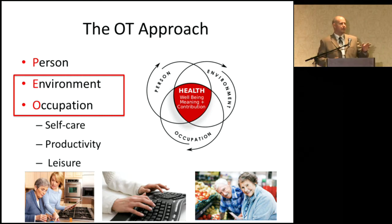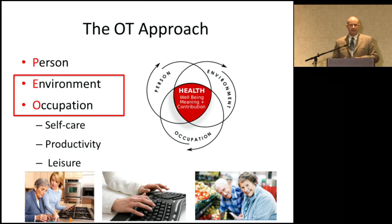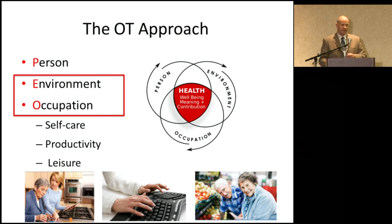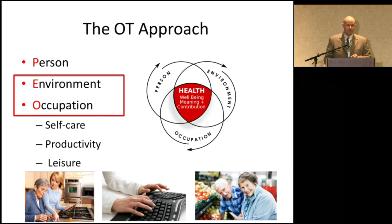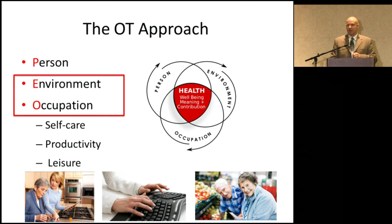Occupational therapy takes a holistic approach using a three-pronged system: the person, the environment, and the occupation. Today I'll be focusing primarily on occupation and environment. The different tasks we complete in everyday life break down into three main areas: self-care, productivity, and leisure. Self-care is getting up, brushing teeth, getting dressed. Productivity isn't just about work — it's engaging in meaningful occupations like gardening or playing with the grandkids. The goal is to get all three circles aligned, where that middle spot represents health and well-being.